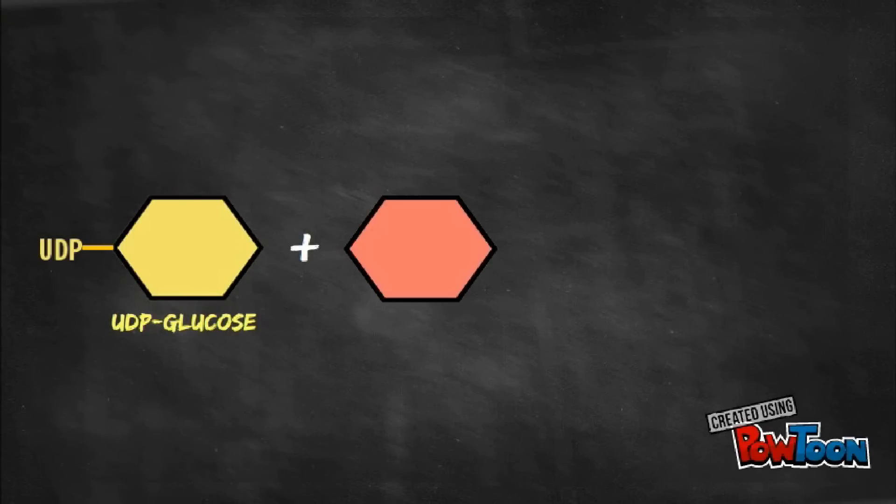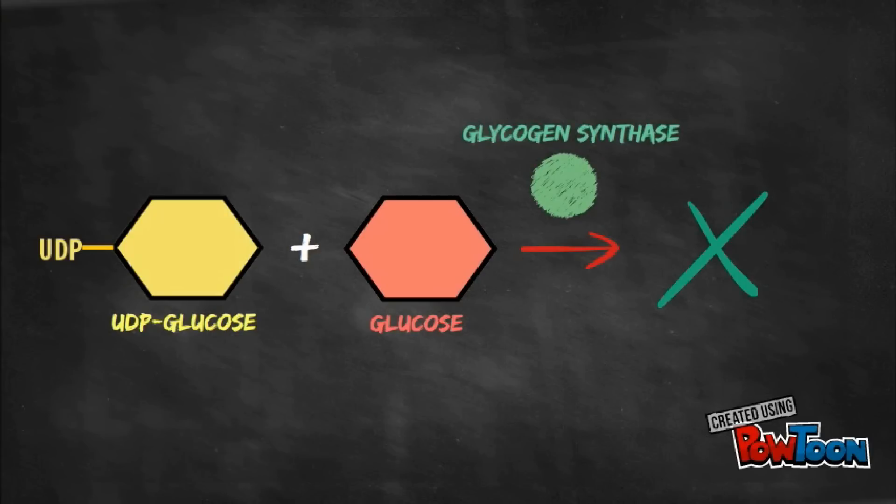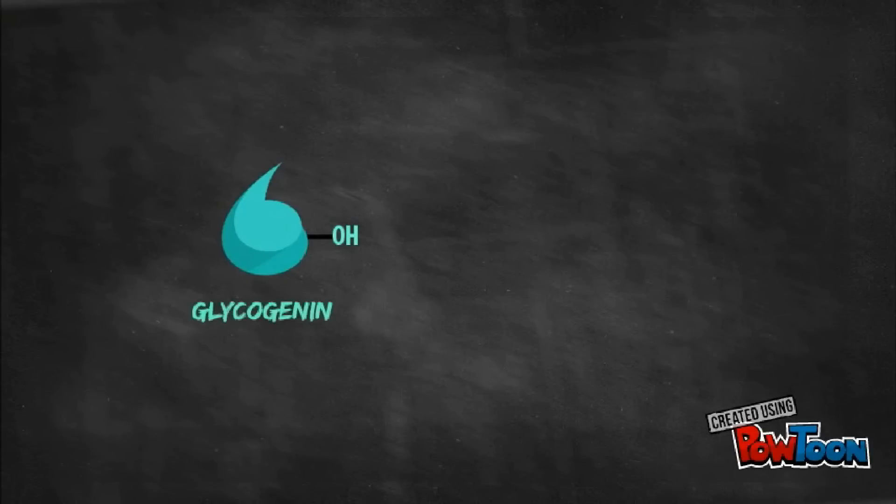Step 2, synthesis of a primer to initiate glycogen synthesis. Since adding UDP glucose and other glucose molecules to elongate the chain via glycogen synthase cannot occur, a primer should be first formed. A protein called glycogenin can serve as an acceptor of glucose residues from UDP glucose.